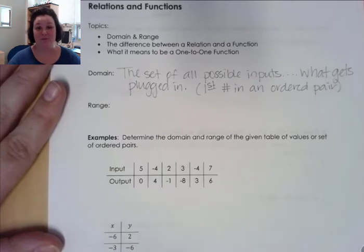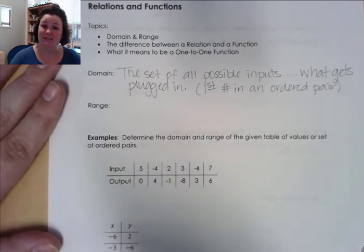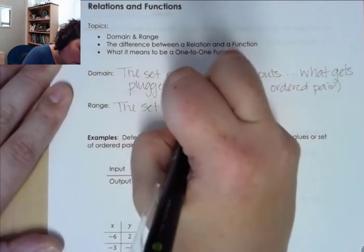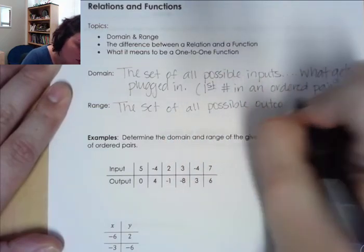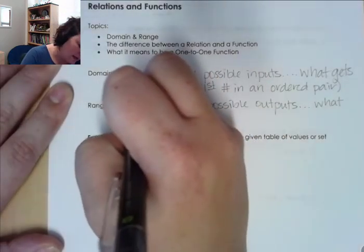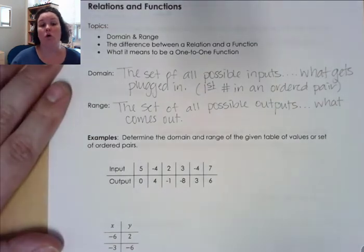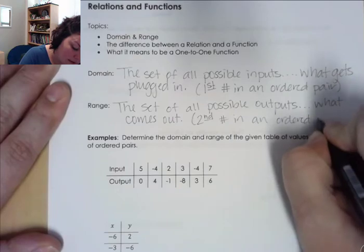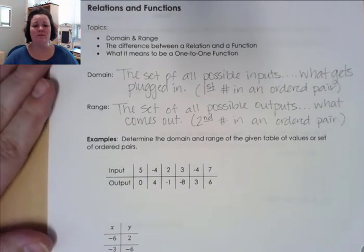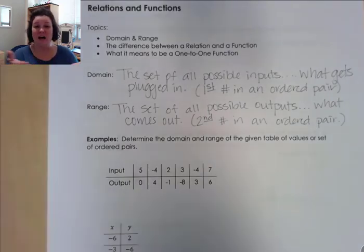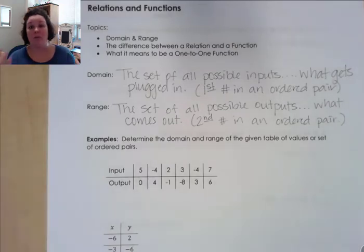The domain is the set of all possible inputs — what gets plugged in and the first number in an ordered pair. Which means the range is the set of all possible outputs — what comes out of the function once we plug something in, and it's the second number in an ordered pair. It's important to identify what all possible values can go into a function, and what all possible outputs are, which is our domain and range.